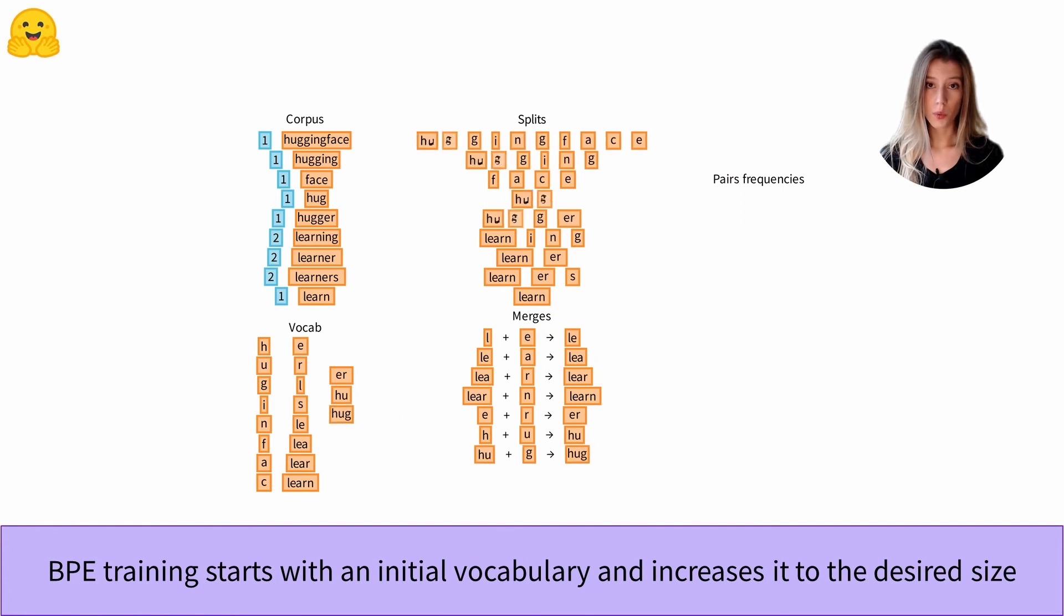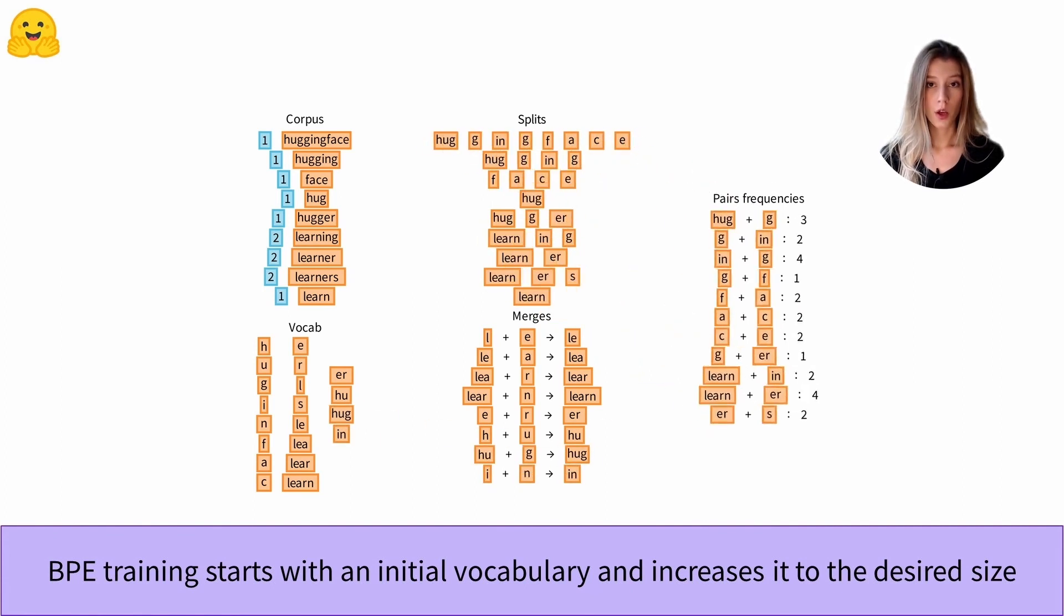Here we stop when our vocabulary reaches 21 tokens. We can see now that the words of our corpus are now divided into far fewer tokens than at the beginning of the training, and that our algorithm has learned the radicals hug and learn, and also the verbal ending ing.